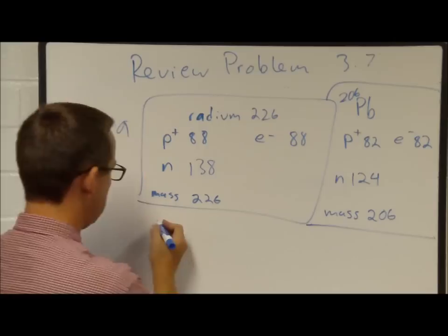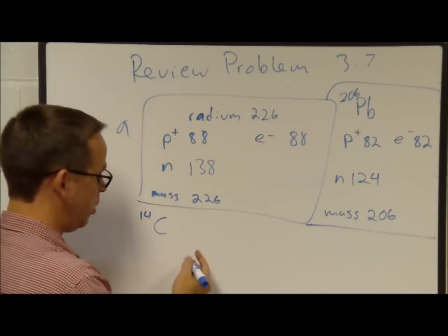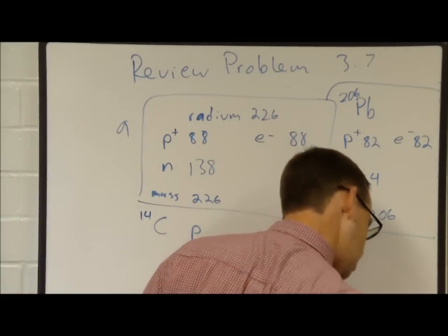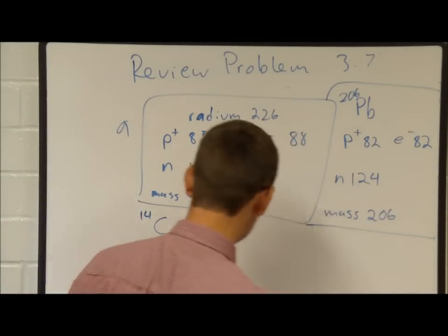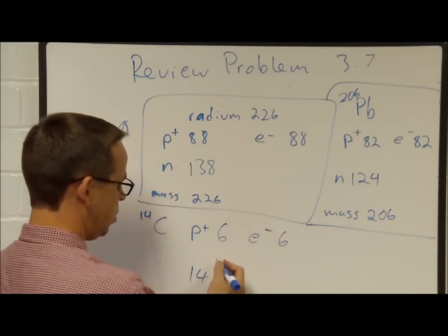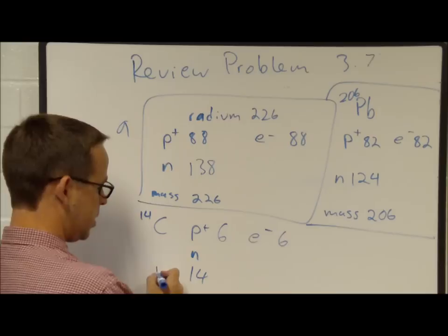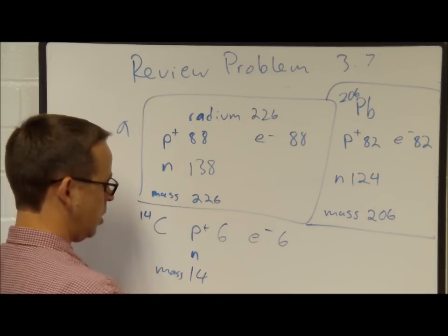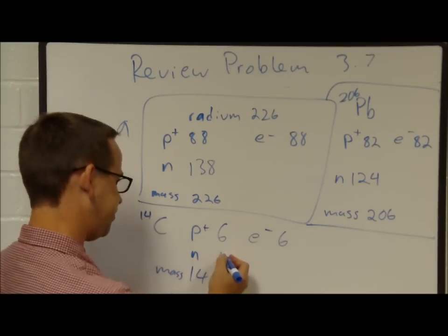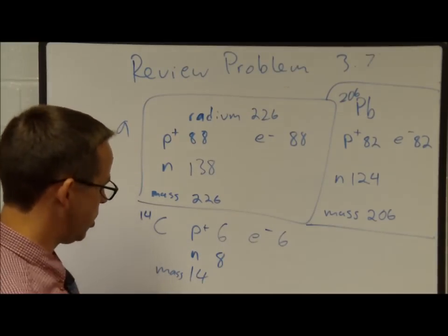Part C is carbon-14. The mass number is 14. Carbon has 6 protons, so there are 6 protons and 6 electrons. Neutrons: 14 minus 6 equals 8 neutrons.